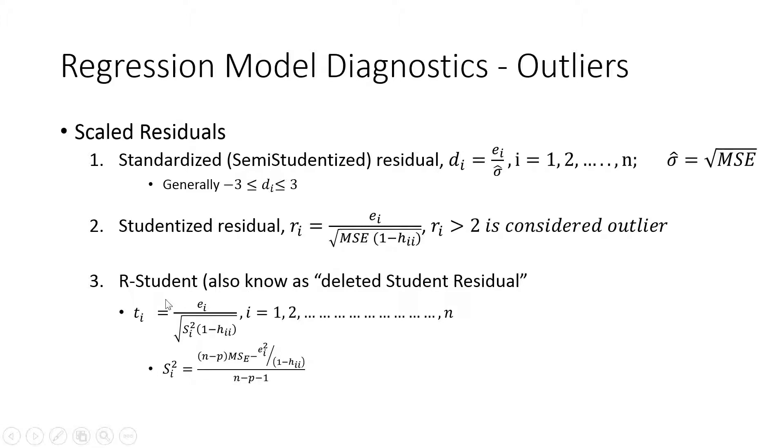Deleted studentized residuals is basically what it says. If we delete one point and then fit the model, what is the predicted value deleting that point and then the observed value? So the deleted residual is calculated as ei, the observed value y minus the y hat by deleting that ith observation.